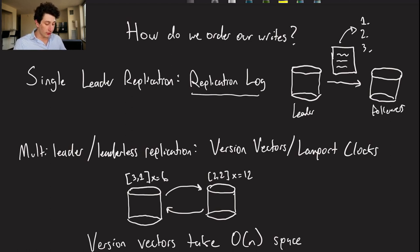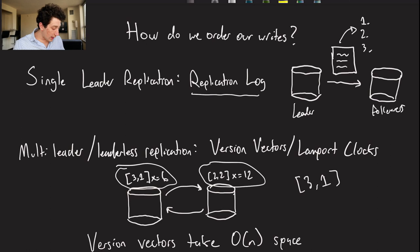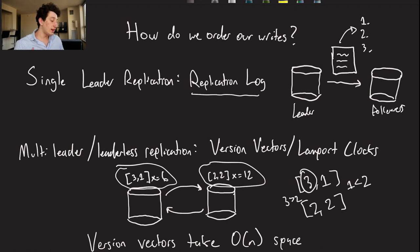A version vector works as follows: the version vector on the left says 3,1 and the version vector on the right says 2,2. On the right database node you've seen 2 updates from the left database node and 2 from the right, while on the left you've seen 3 updates from the left and 1 from the right. Because 3,1 and 2,2 are interleaved — 3 is greater than 2 but 1 is less than 2 — these two version vectors are concurrent, meaning there's no complete order. We can assign a complete order by using a tiebreaker, arbitrarily choosing an ordering, and that's effectively what Lamport clocks do as well.